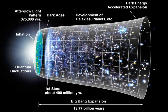Hubble's law has two possible explanations. Either we are at the center of an explosion of galaxies, which is untenable given the Copernican principle, or the universe is uniformly expanding everywhere. This universal expansion was predicted from general relativity by Alexander Friedman in 1922 and Georges Lemaître in 1927, well before Hubble made his 1929 analysis and observations, and it remains the cornerstone of the Big Bang theory as developed by Friedman, Lemaître, Robertson, and Walker.